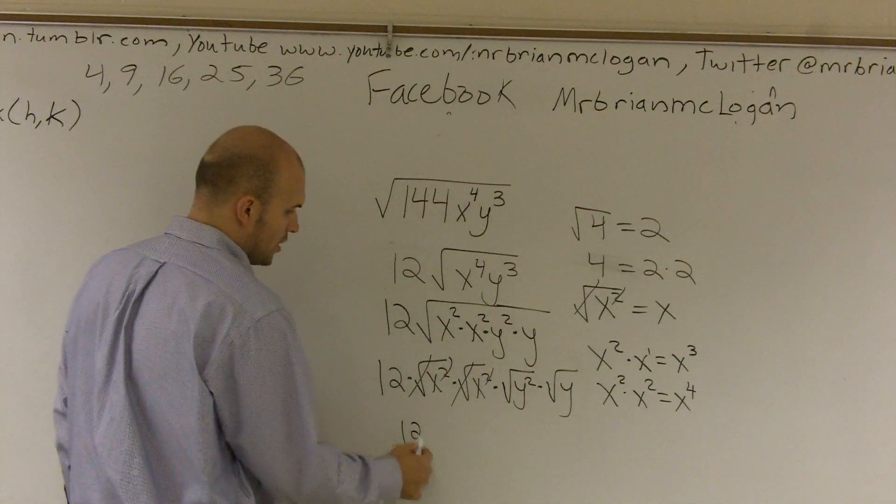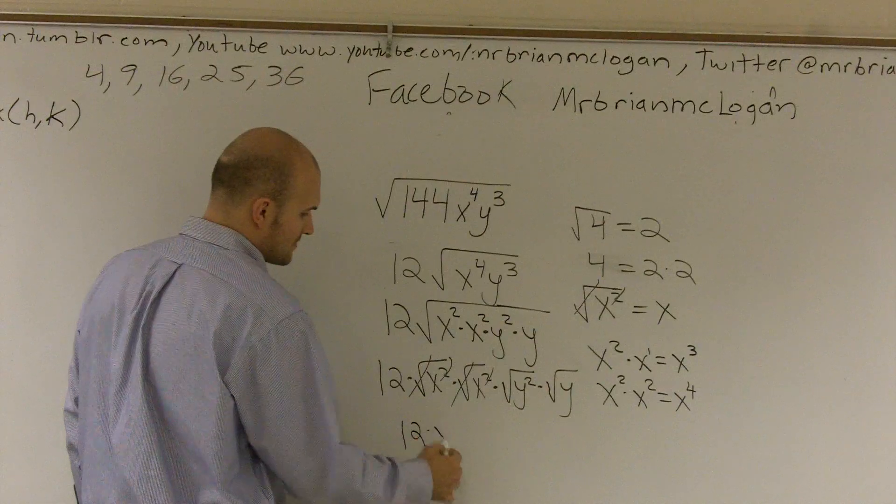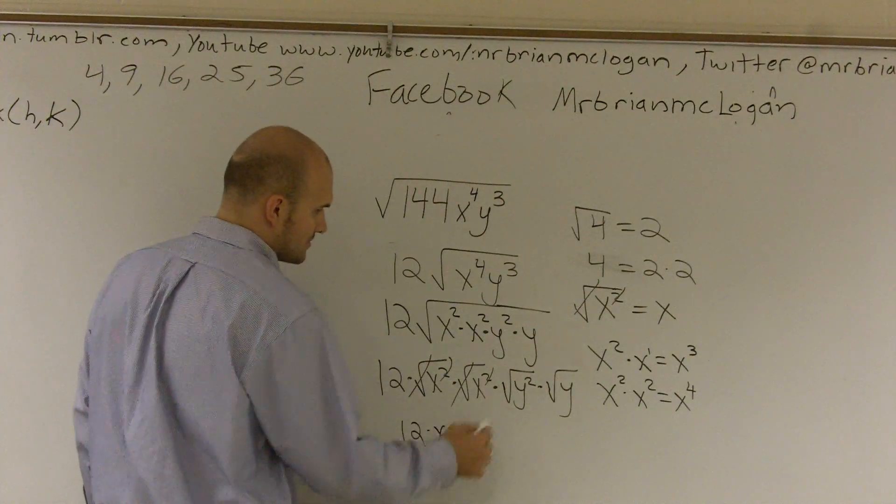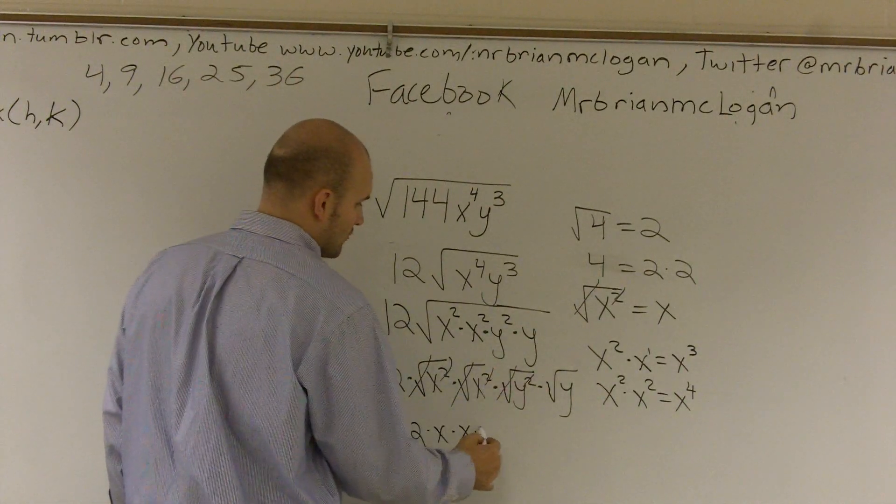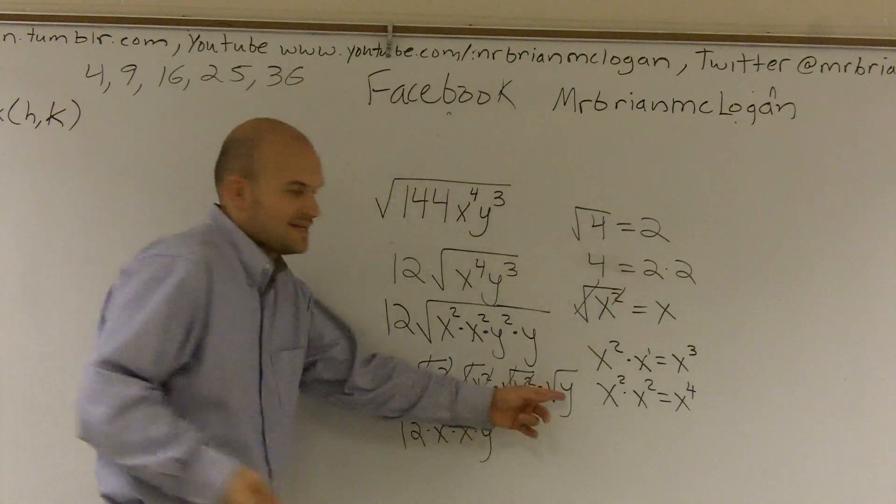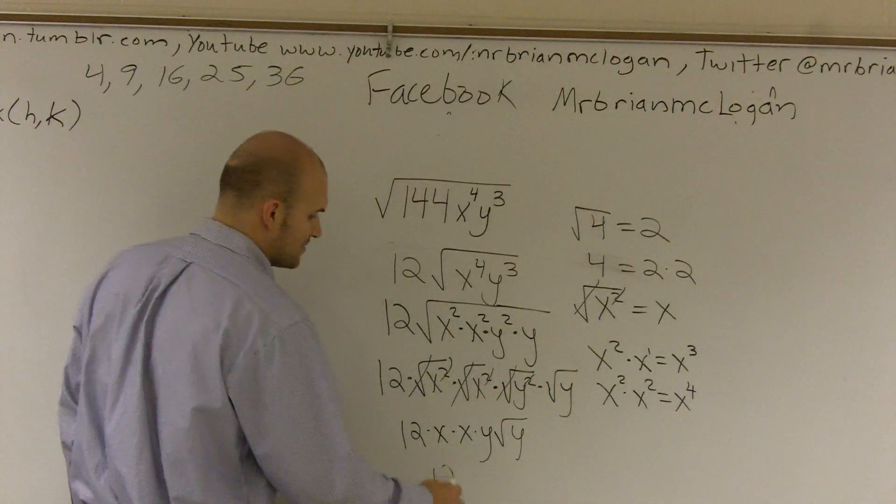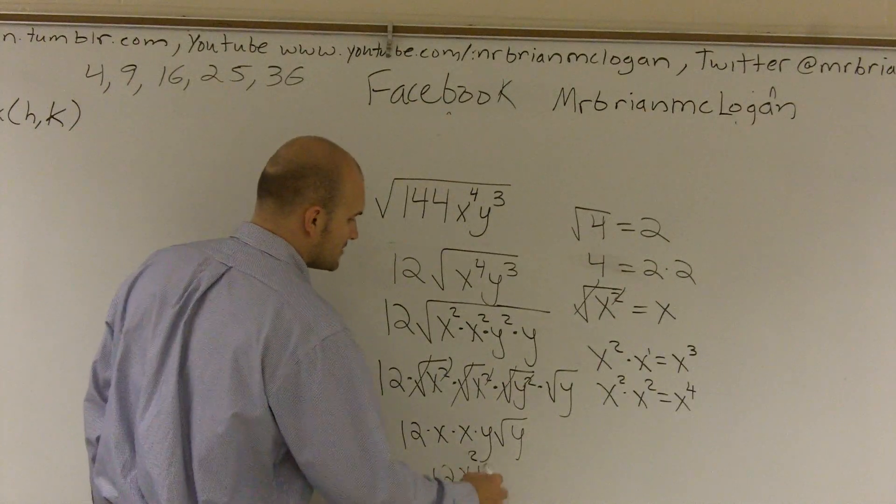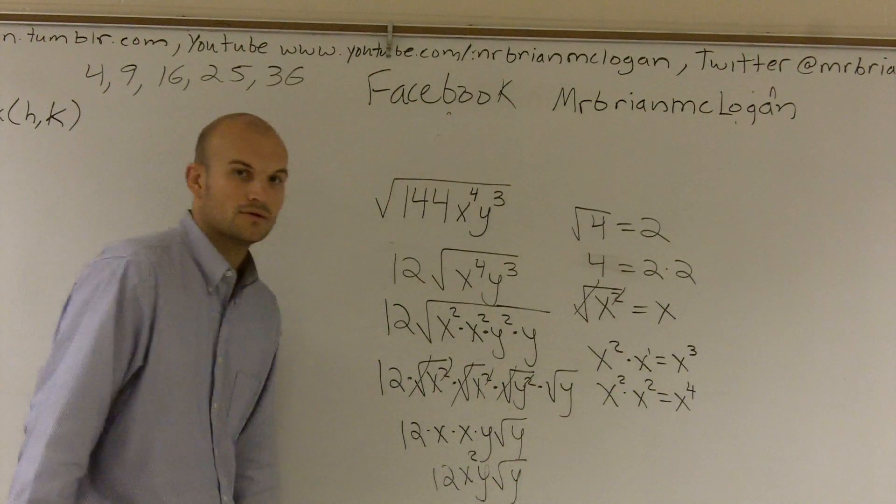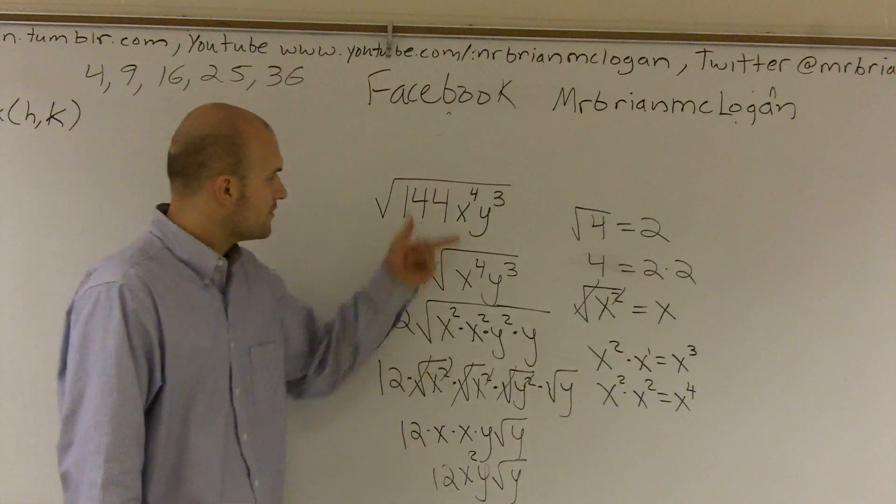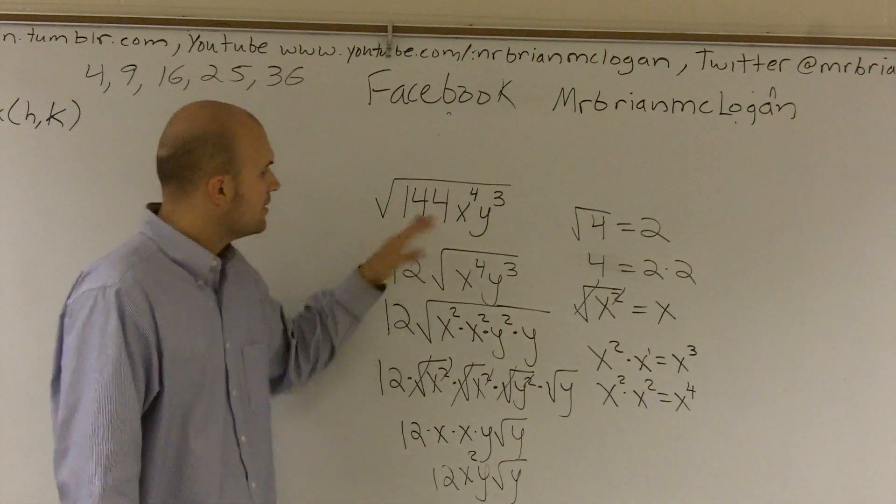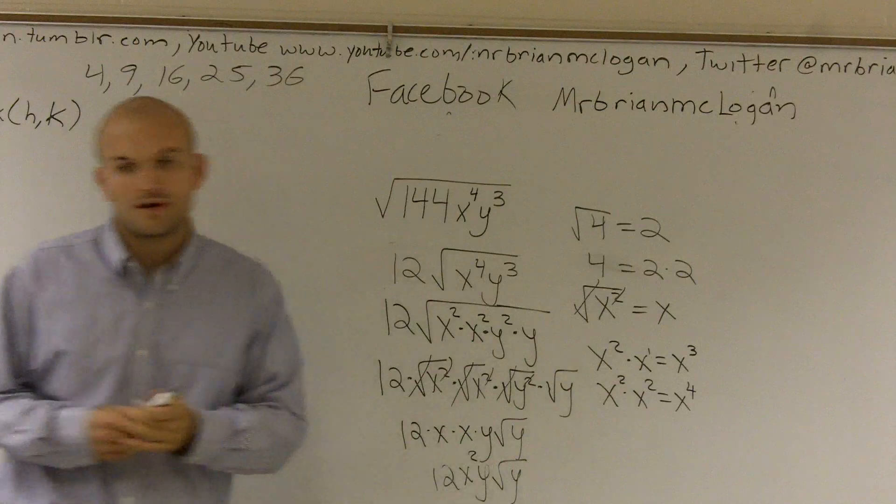Those two all cancel out to give me 12. That becomes x. That becomes x. These cancel out to give me y. And then I can't cancel anything out with this, so it's still going to be root y. So the final answer would be 12x squared times y times the square root of y. So that's how you simplify when given variables under your radical.